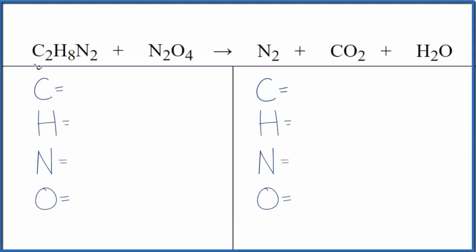Let's balance the equation C2H8N2 plus N2O4. So the first thing that we need to do with this is we need to count the atoms up and we need to be careful here.